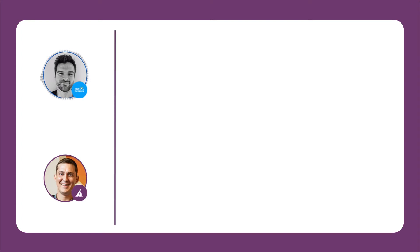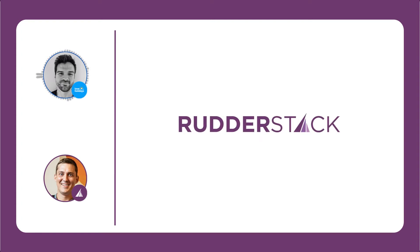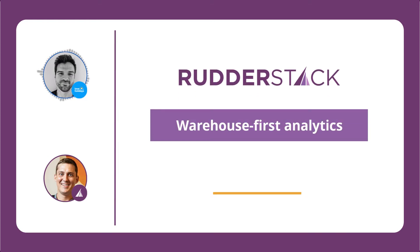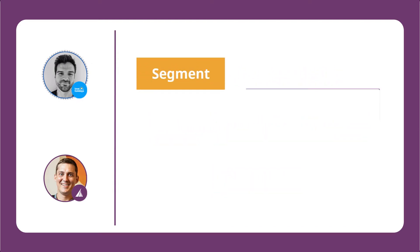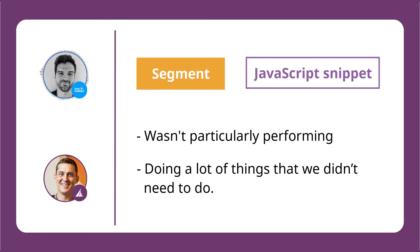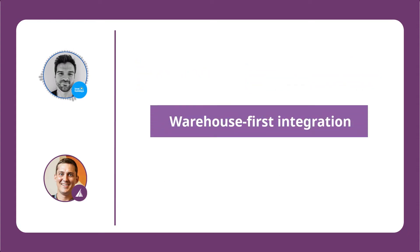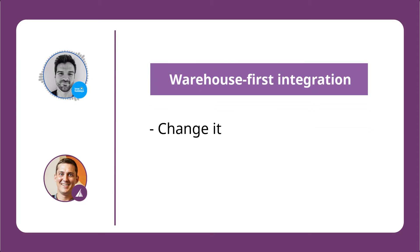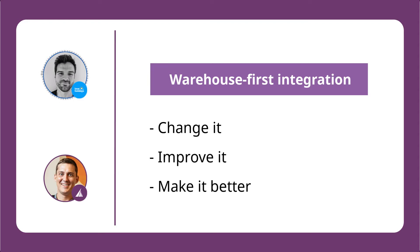Prior to RudderStack, we'd actually started migrating to a warehouse-first analytics approach with Segment. Segment does some things really well, but unfortunately with our clear focus on performance, we noticed that the Segment JavaScript snippet wasn't particularly performant and was doing a lot of things that we didn't need it to do. We have quite a straightforward warehouse-first integration, and we wanted to be able to change it and improve it, but it didn't seem that we could.